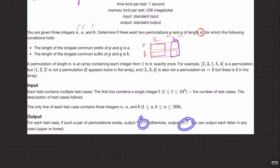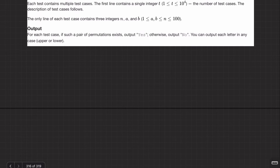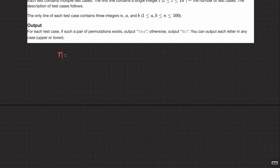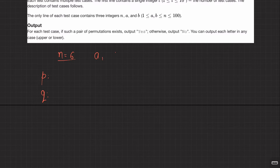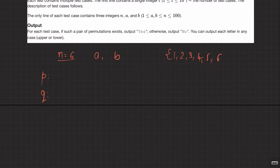We just have to print yes or no. Output each letter in any case, no issues. Let's take an example to make things clearer. Take n=6. I have to come up with two permutations p and q where the allowed elements are 1, 2, 3, 4, 5, 6, each used exactly once.